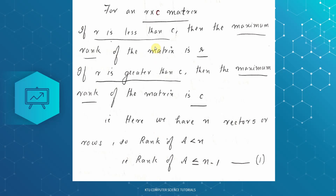For an R by C matrix, R is the number of rows and C is the number of columns. If R is less than C, the maximum rank of the matrix is R. If R is greater than C, the maximum rank of the matrix is C.